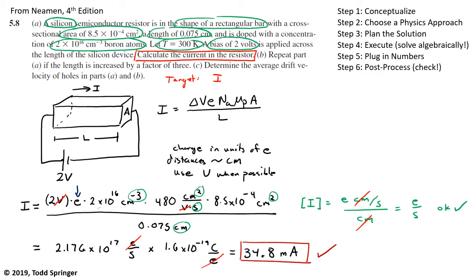Let's move on to part B. Part B, pretty simple, repeat the part A if the length is increased by a factor of 3. So this is the whole reason to solve the problem algebraically. We have this formula, this nice formula which is sitting right here. And so now all I have to do is look at that formula and plug different numbers into it. I don't have to re-solve the problem, I can just use this formula. And you can see that the L is in the denominator there. So if the length goes up by a factor of 3, the current is going to go down by a factor of 3. So I is proportional to 1 over L.